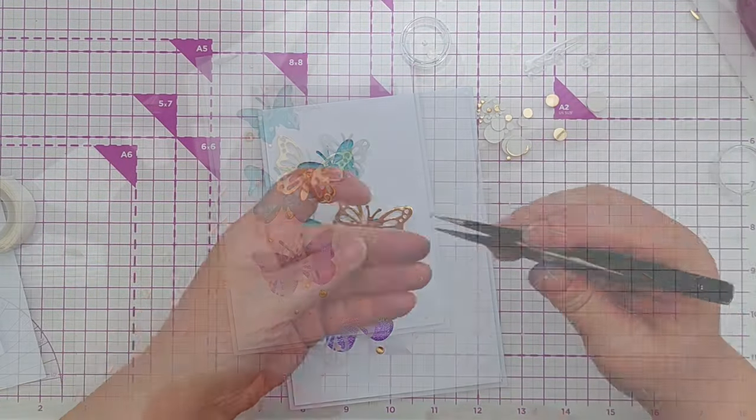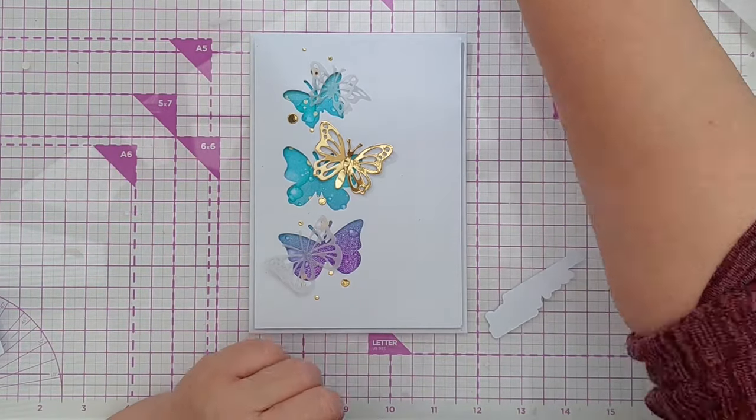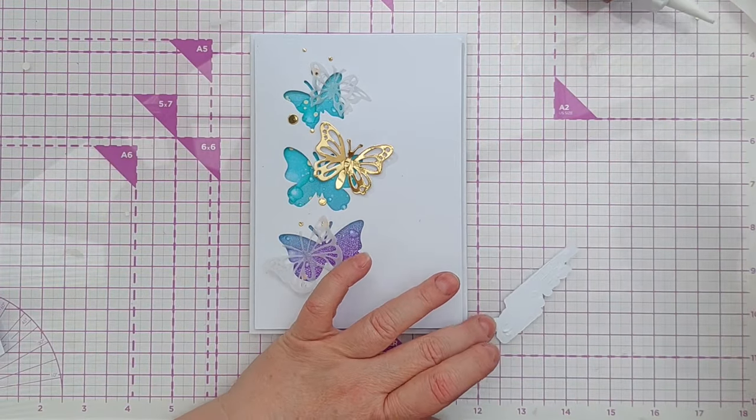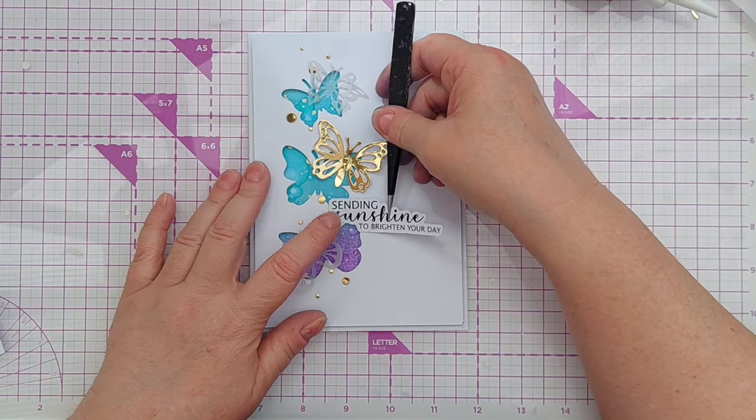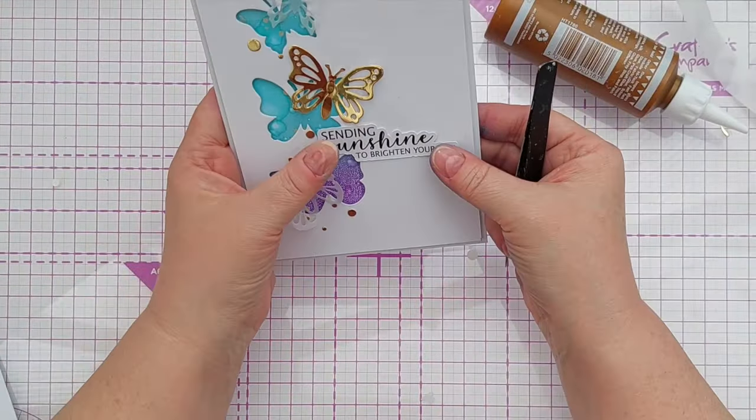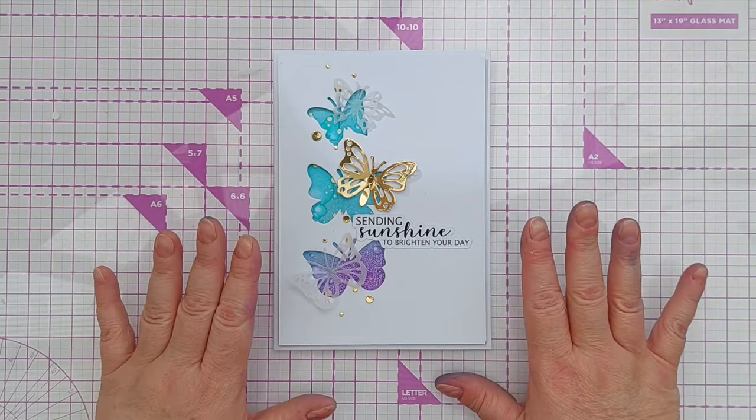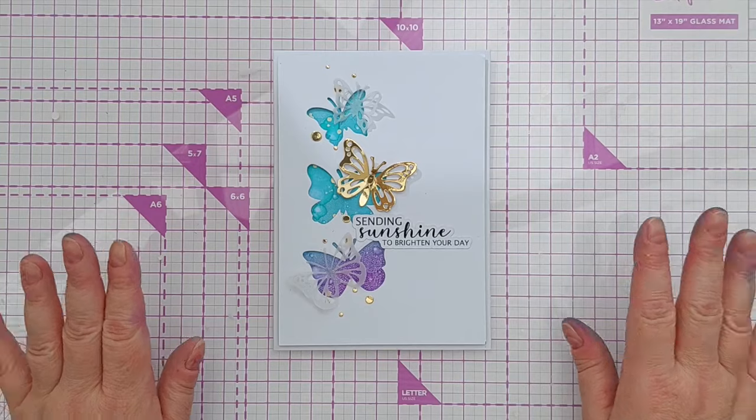And for my sentiment, I've got this pre-printed and pre-cut, 'Sending sunshine to brighten your day,' which I think works well with the gold butterfly flying out from the darker background. And there we go, one card made with a gel print.